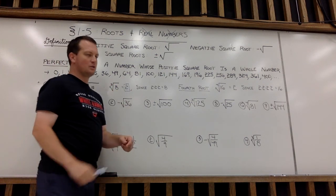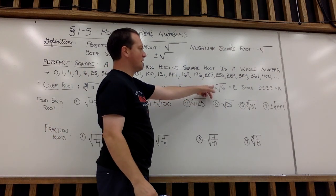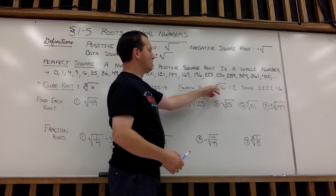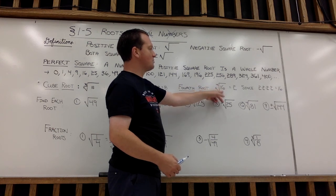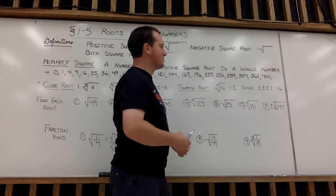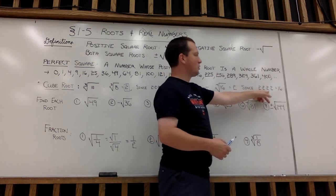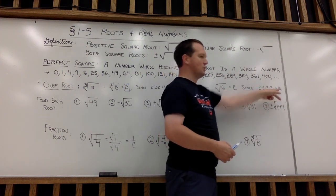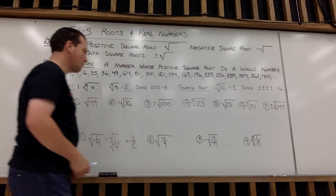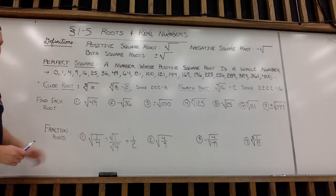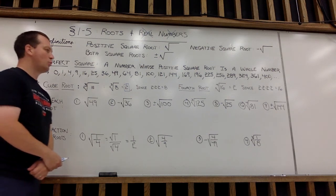We're also going to take a look at a few 4th root examples, asking here what number multiplied by itself 4 times is 16. That also happens to be 2, since multiplying 2 times 2 is 4, 4 times 2 is 8, 8 times 2 is 16. We're going to take a look at 7 examples here before we look at fractional roots.